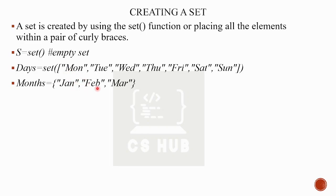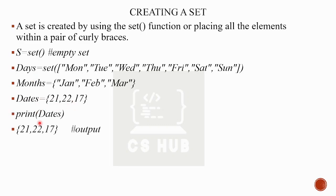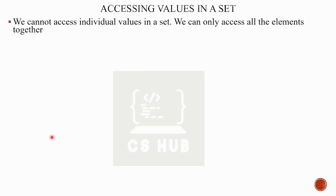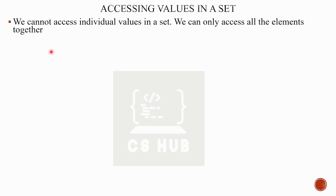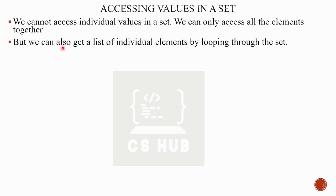The constructor method is the normal method to create a set. For example, set of integers: {21, 22, 27}. If we print the set and check the type, it will show class 'set'. Regarding indexing: if you have indexing, you can access individual values. But we cannot access individual values in a set. We can only access all the elements together. We can also get a list of individual elements by looping through the set — we can traverse all the elements.